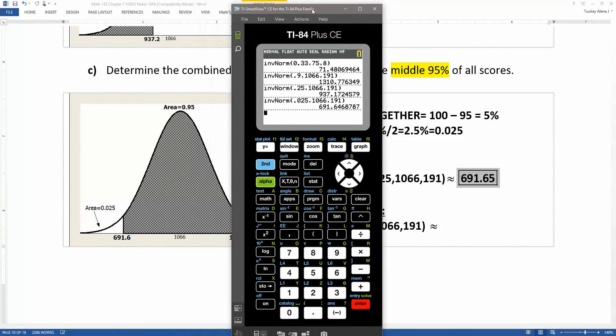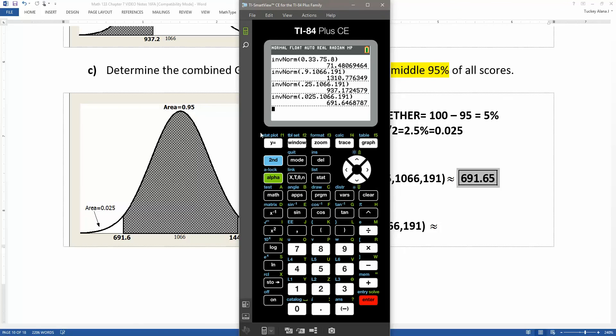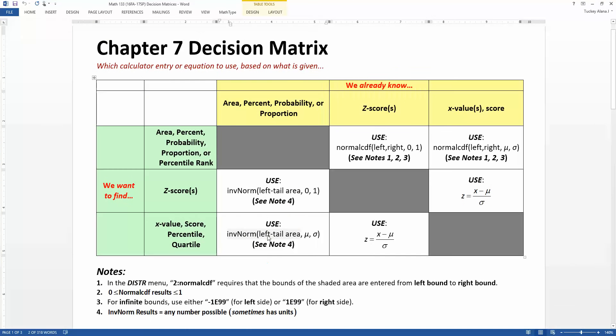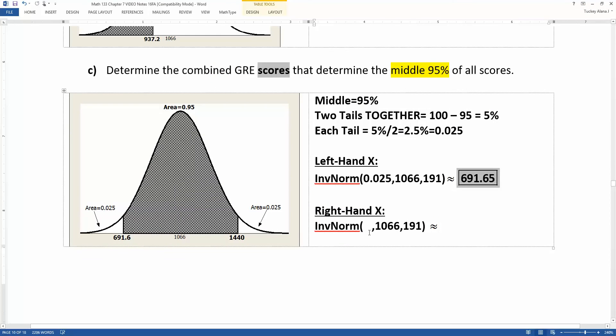So now let's look at the other score. The other score is over here on the right. And what we need is the entire area to the left of that. We have this whole gray region here, plus we have this white tail. So what we need to do is we need to add them up. You take the 0.95 plus 0.025. And what you'll have is 0.975. That is the entire left area for this right-hand score. And that's what you need to use for inverse norm. Because remember, inverse norm says you have to use the left tail area, no matter what. So that means that we're going to have to use 0.975, 1066, 191.